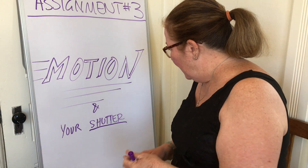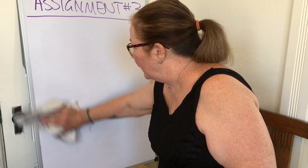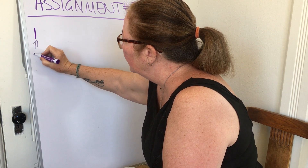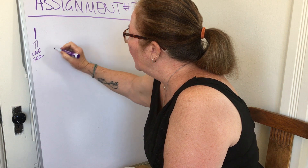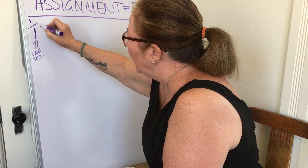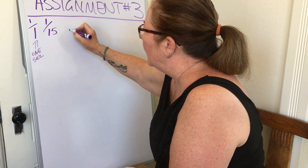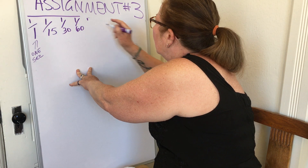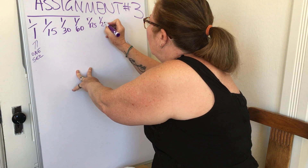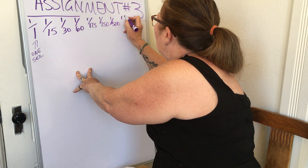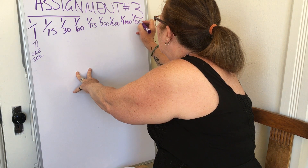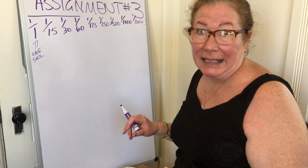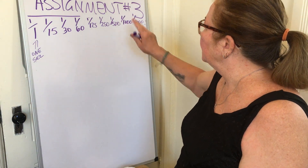Shutter speeds are fractions. You might see on your camera: 1/15, 1/30, 1/60, 1/125, 1/250, 1/500, 1/1000, 1/2000, and so on. Some cameras go as fast as 1/5000th of a second, which is extremely fast. Assignment number three will focus on this.